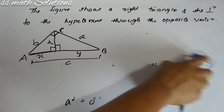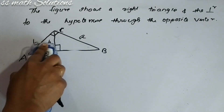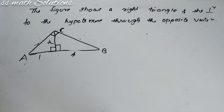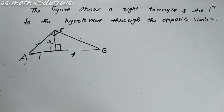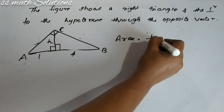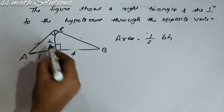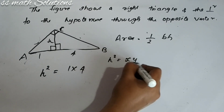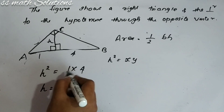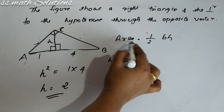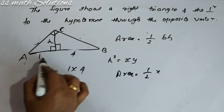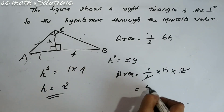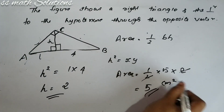Now coming back to our problem: the two segments are 1 and 4. Using the altitude on hypotenuse theorem, H² = X · Y = 1 × 4 = 4, so H = 2. The area of the triangle equals ½ × base × height = ½ × (1 + 4) × 2 = ½ × 5 × 2. The 2s cancel, giving area = 5 cm². That is the answer.